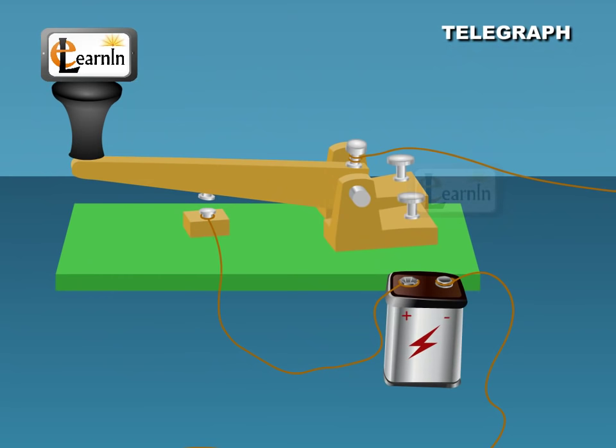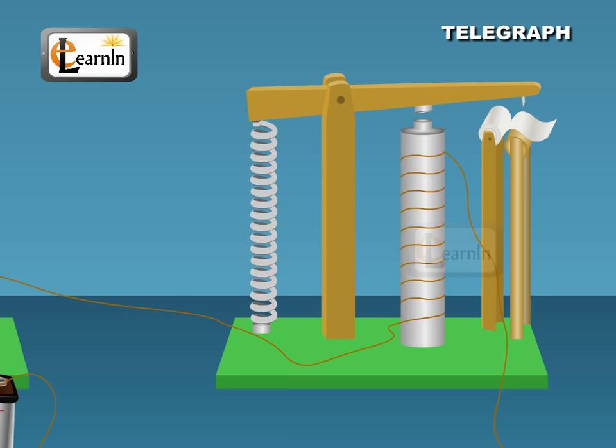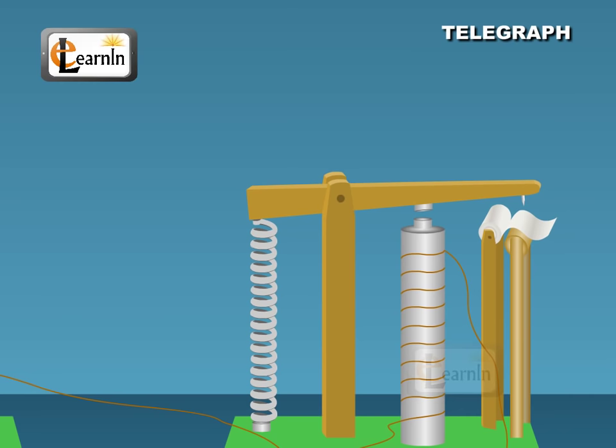From the Morse key, the cable runs to place B. At place B, the cable is connected to the electromagnet M and ground earth. An armature is held in the position as shown in contact with rod K1 with the help of spring S.